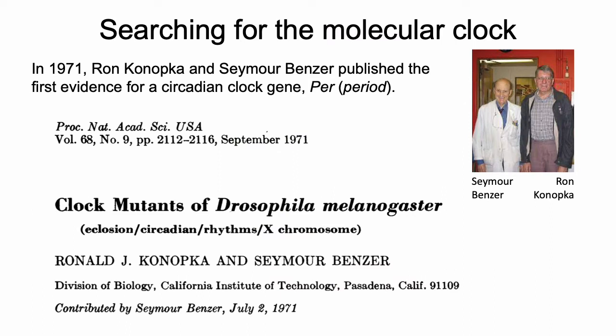This got started in a paper published in 1971 by Ron Konopka and Seymour Benzer, and they found the first evidence for a gene that controls the circadian rhythm. It had an effect on eclosion, which is the development of pupa into adult insects. They found this in fruit flies, and also in locomotor behavior of individual fruit flies.